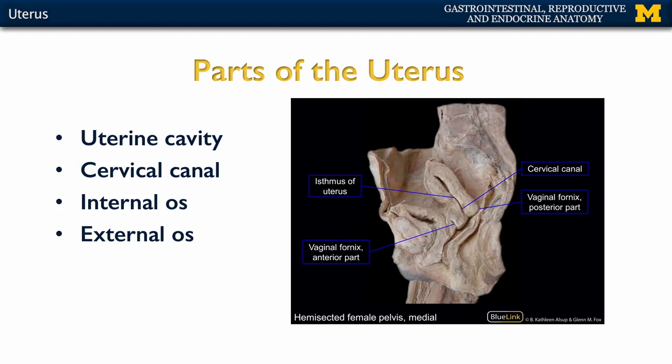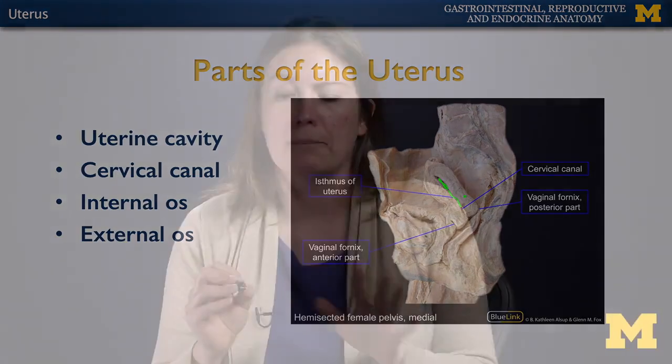Now let's talk about the hollow portions of the uterus. The majority of the lumen is referred to as the uterine cavity — this portion right in here that will lead into the cervical canal. We're going to talk about the internal and external os in just a minute.